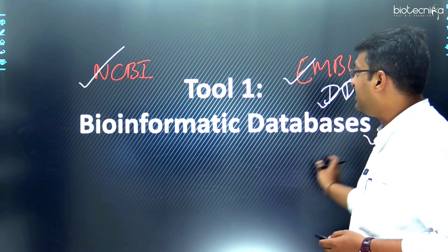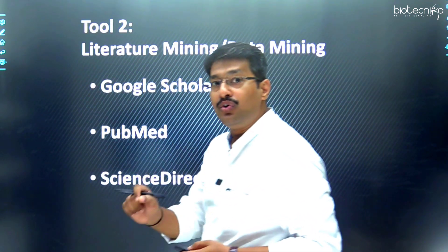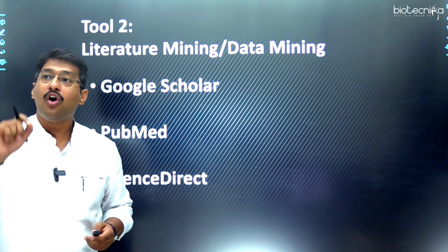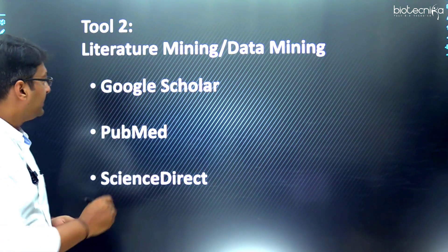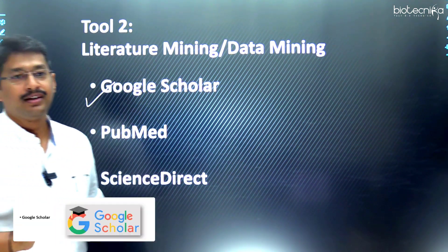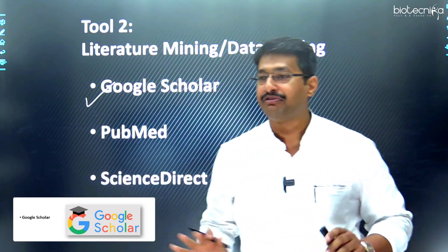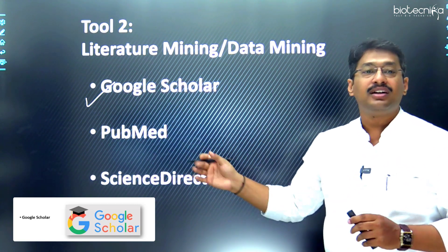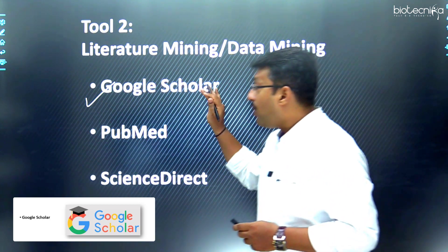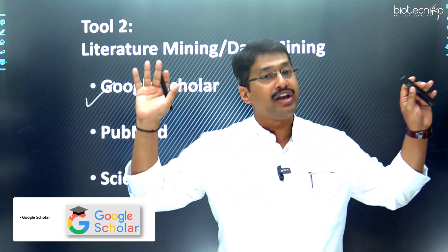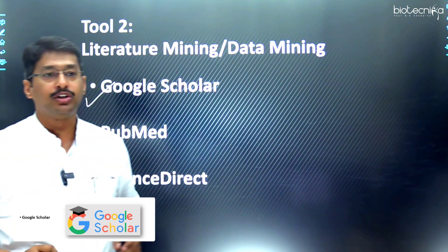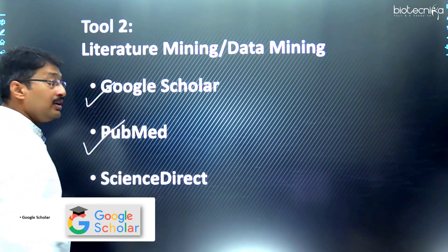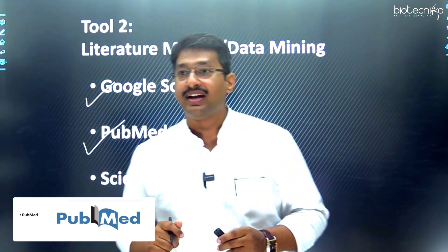The second tool is for literature mining or data mining. There are three major tools. The first is Google Scholar — for bioinformatic data, Google Scholar gives huge information, and all scholarly articles performed by scientists across the world are published there, many times available for free download.